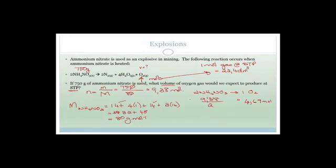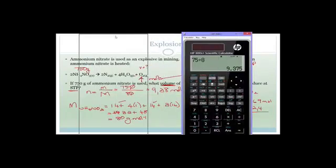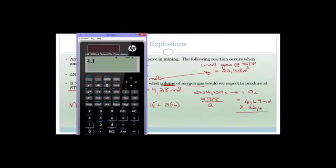But that wasn't the question. What was the question? The question was what volume of oxygen gas would we get out? So we know that 1 mole of gas at STP gives us 22.4 decimetres cubed. But we don't have 1 mole, we've got 4.69 moles. So therefore, we're going to multiply that by 22.4 to find the total volume.